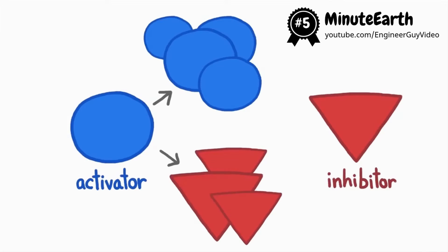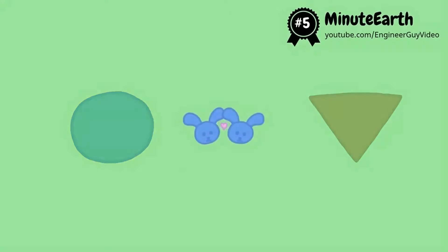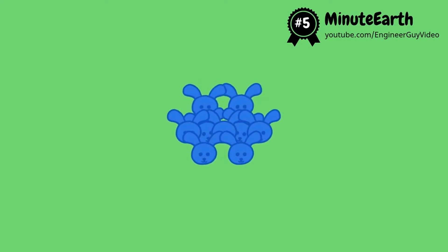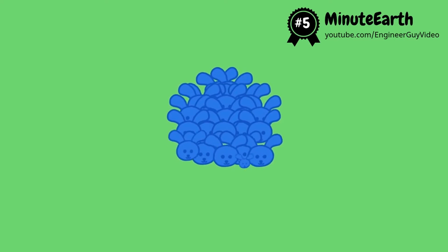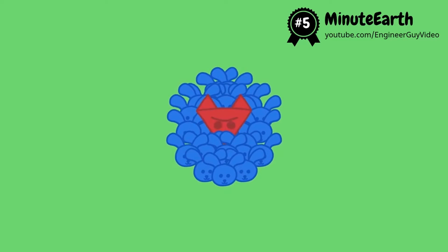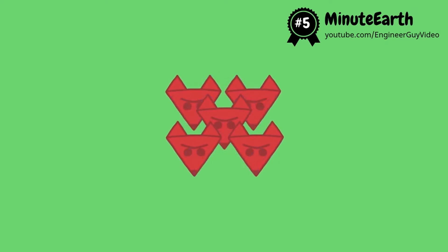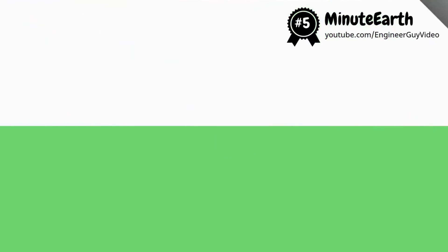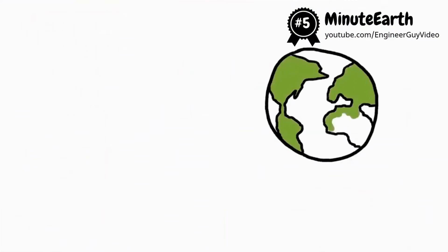The activator stimulates production of both substances while the inhibitor slows production down. The more activator bunnies there are, the more new bunnies they make. But a bigger bunny population also means more food for the inhibitor foxes, which means more foxes, which leads to fewer bunnies, which leads to fewer foxes.